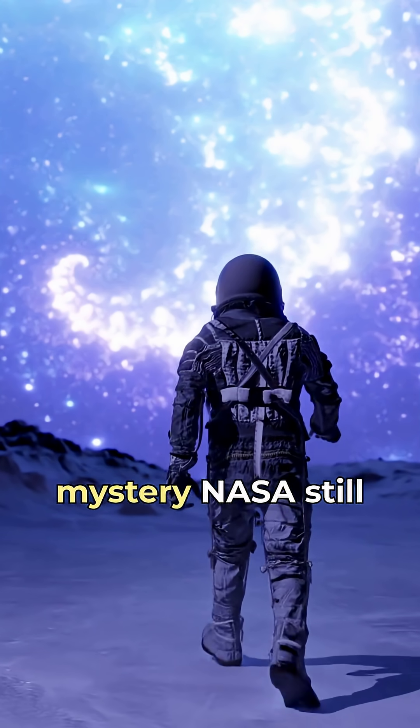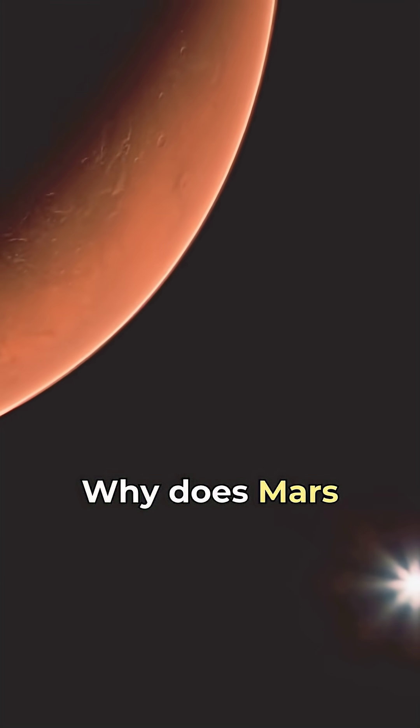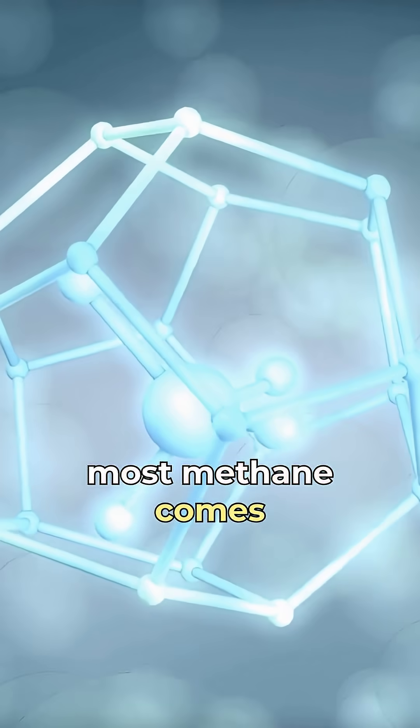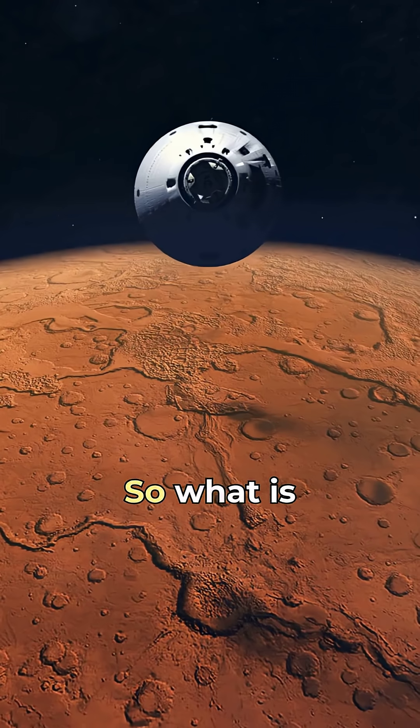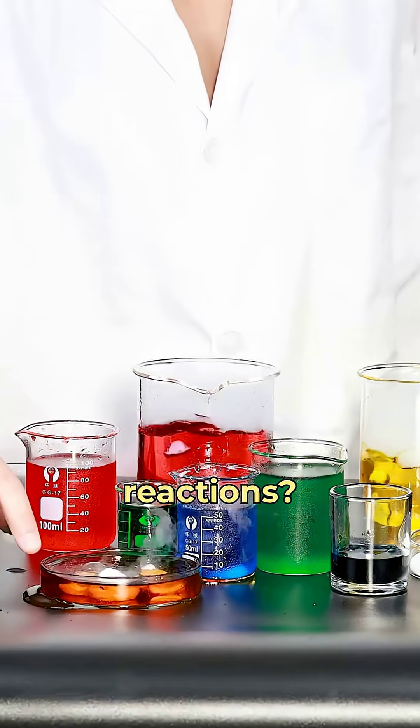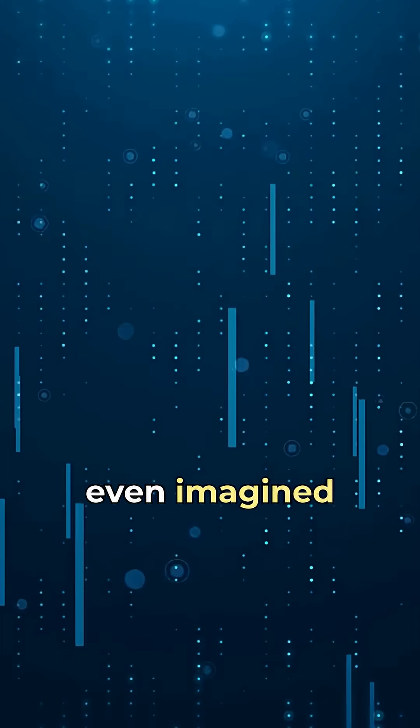But here's the mystery NASA still can't explain. Why does Mars release methane every summer? On Earth, most methane comes from living organisms. So what is creating it on Mars? Underground microbes? Chemical reactions? Or something we haven't even imagined yet?